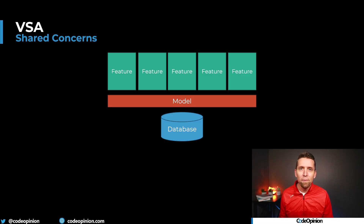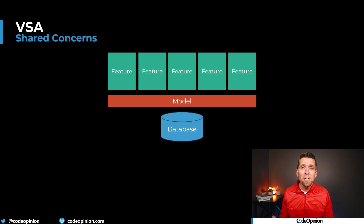The most common example of this is your underlying domain or data model — this thing is shared across features. Sure, your features are given use cases, specific use cases, but they may all be sharing that same underlying domain or data model. The key aspect is you don't have a domain model or data model that's shared across the entire system. It's very specific — it's vertical in what those features actually need. That should be very narrow, very focused.